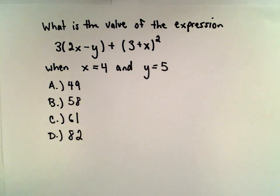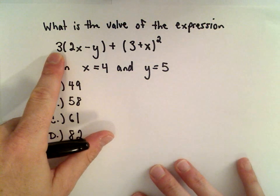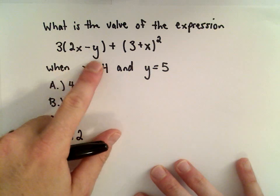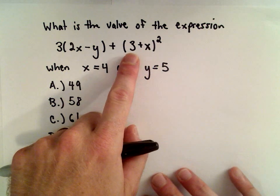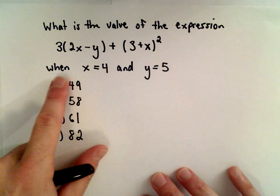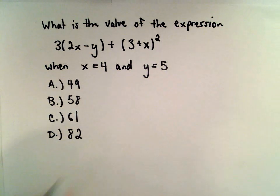Okay, in this example, we want to know what's the value of the expression 3 multiplied by the quantity 2x minus y, plus the quantity 3 plus x squared, when x equals 4 and when y equals 5.